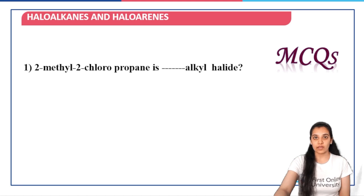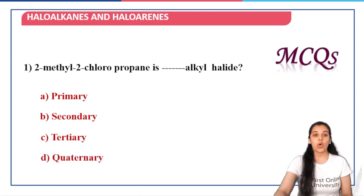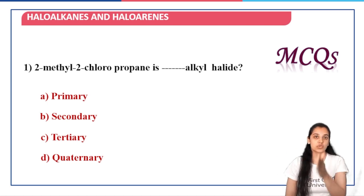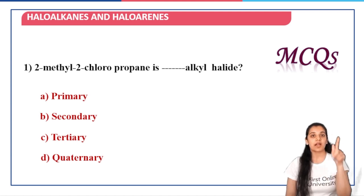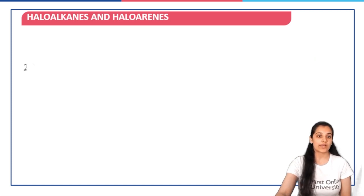2-methyl-2-chloropropane is a blank alkyl halide — primary, secondary, tertiary, or quaternary? You can draw the structure: we have propane with CH3-C-CH3, to this central carbon there is another CH3 attached and one Cl attached. Since this carbon atom is further attached to three other carbon atoms, we call it a tertiary alkyl halide. Whenever this type of question is asked, draw the structure and then answer.